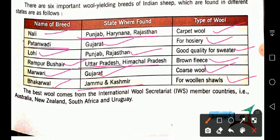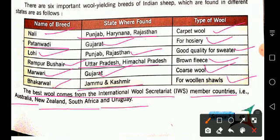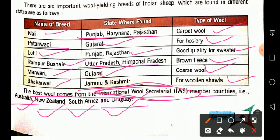Bhakarwal sheep, found in Jammu and Kashmir, are used to make woolen shawls. The best wool comes from the International Wool Secretariat member countries — Australia, New Zealand, South Africa, and Uruguay. These countries transfer wool to this secretariat organization, which then distributes the best quality wool worldwide.